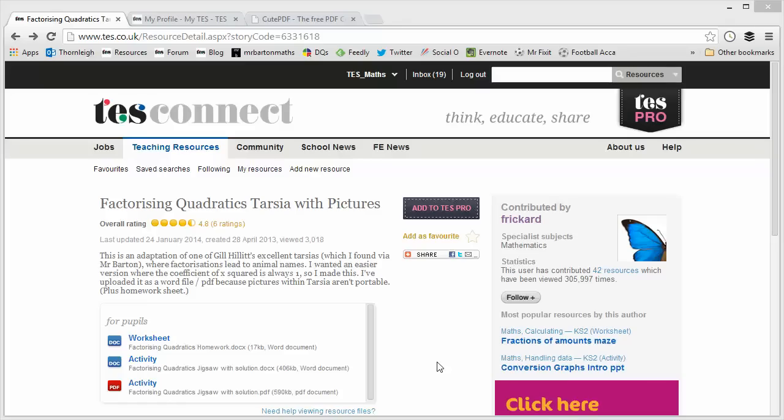In the first resource of the week video of this current series, I looked at an innovative way of using Tarsia jigsaws that I called 'find five mistakes,' and that one went down quite well. While I was looking for the resource of the week this week, I stumbled upon this wonderful idea from Frickard who finds another interesting and innovative way of using Tarsia with pictures.